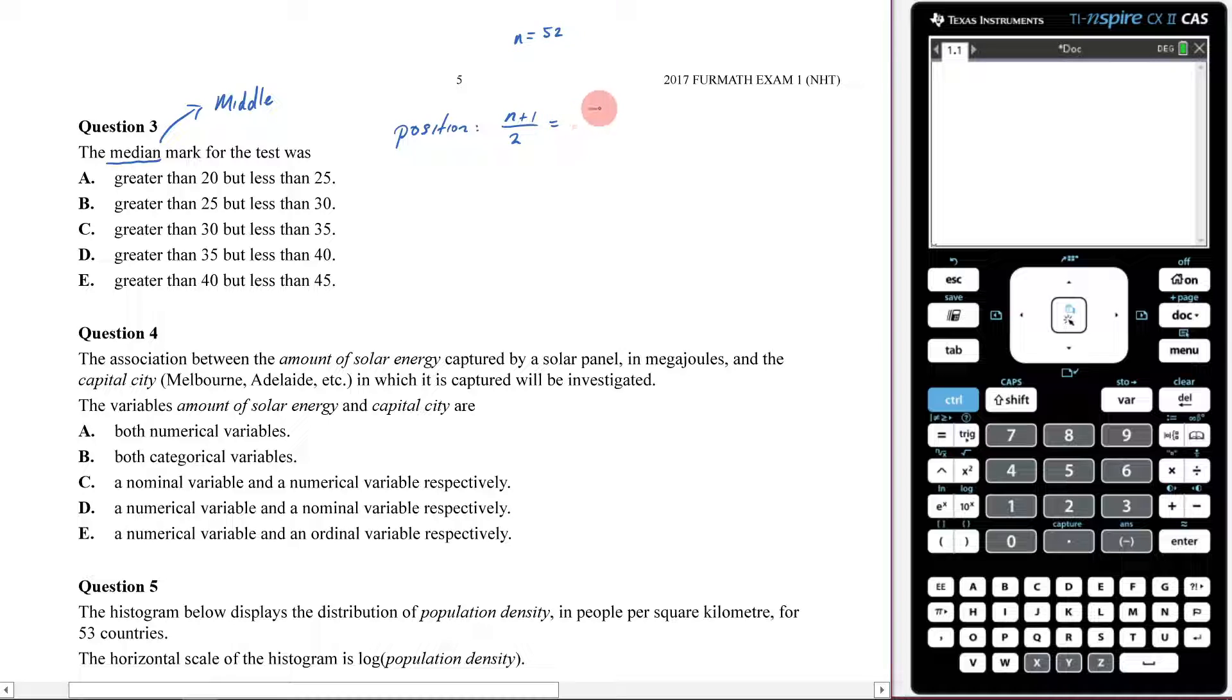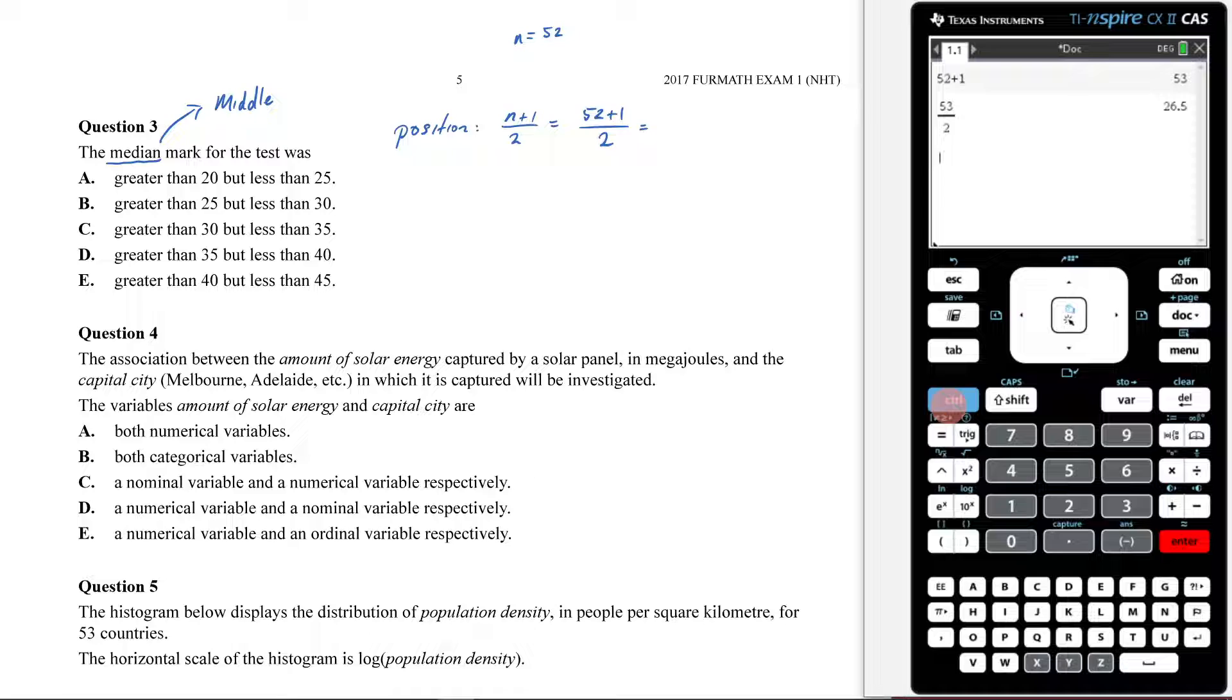So therefore, what we're going to do is go 52 plus 1 and then divide that by 2. So 52 plus 1, then we're going to divide that by 2, and we get 26.5.